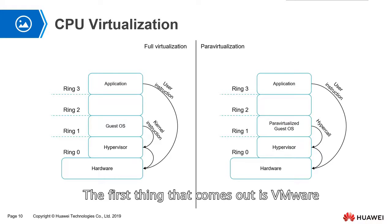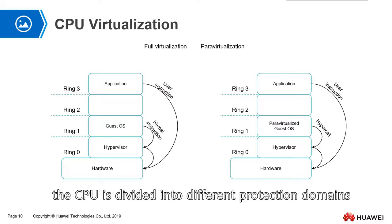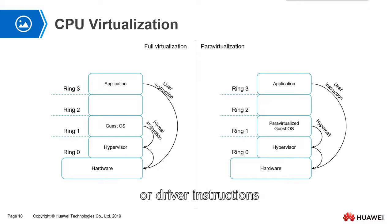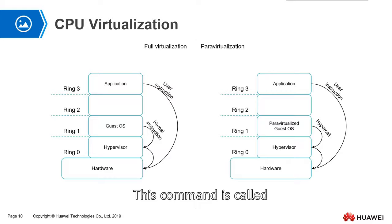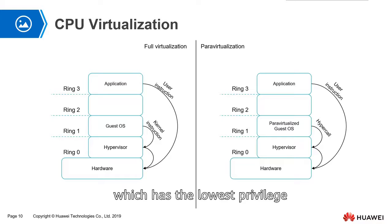The first products that came out were VMware and Xen, and finally KVM. For security reasons, the CPU is divided into different protection domains known as Ring 0, Ring 1, Ring 2, and Ring 3. Only the operating system or driver instructions can run on the highest privileged Ring 0. This is called the core command or privileged instruction. Other applications typically run on Ring 3, which has the lowest privilege — this type of instruction is called a user instruction.